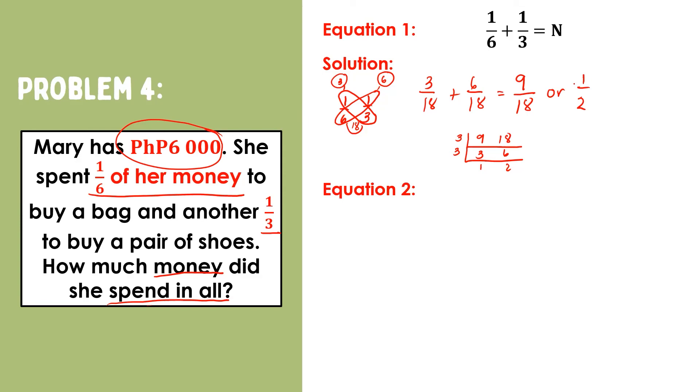But, we're not done yet. We still need to find one-half of six-thousand. So let us multiply one-half and six-thousand. One times six-thousand is six-thousand. Then, copy two. This is an improper fraction, so let us regroup.